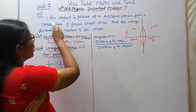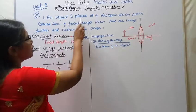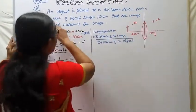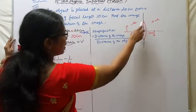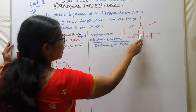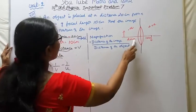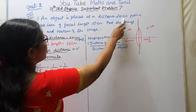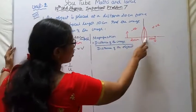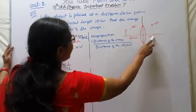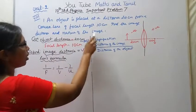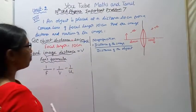Numerical problems: an object is placed at a distance of 20 cm from a convex lens. Here is the convex lens, and here is the object. This distance is 20 cm and the focal length is 10 cm. Find the image distance and the nature of the image.